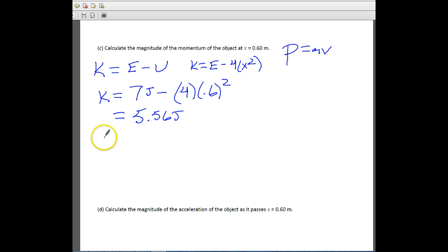Now we need to solve this for speed. We know that kinetic energy is equal to 1 half mv squared. We know that our kinetic energy was 5.56 joules. That's equal to 1 half times 3, which is our mass, times v squared. So if you solve for v, you should get 1.92 meters per second.